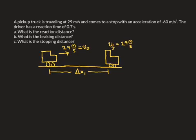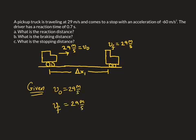So we can go ahead and write a list of given information for that stage of the problem. We know that the initial velocity is 29 meters per second. The final velocity is also 29 meters per second because we haven't applied the brakes. The acceleration is 0, again because we haven't applied the brakes. We know that the time spent in that stage is 0.7 seconds. And we're looking for the displacement in that stage, which we're going to denote as the reaction distance.